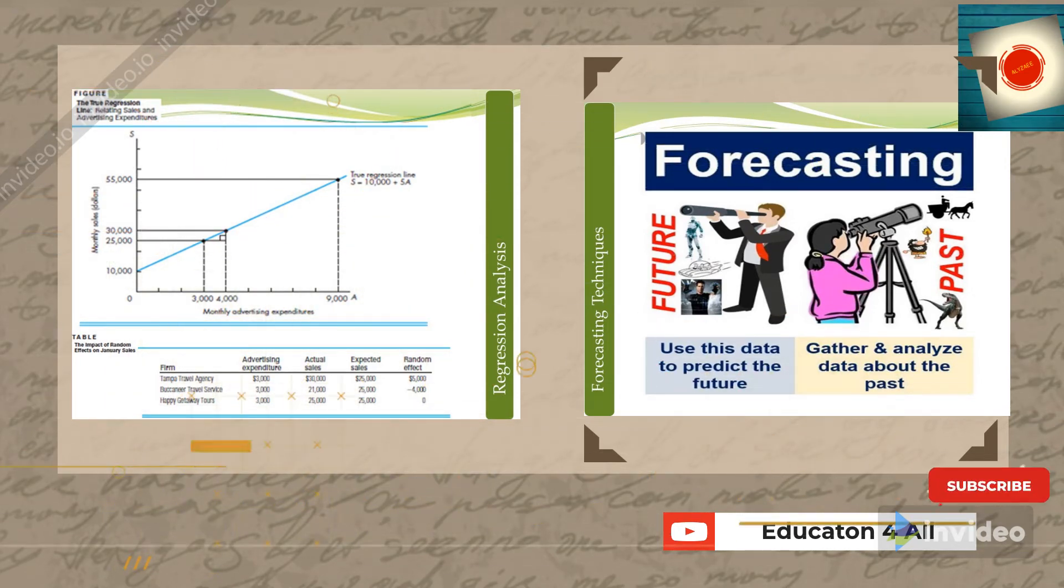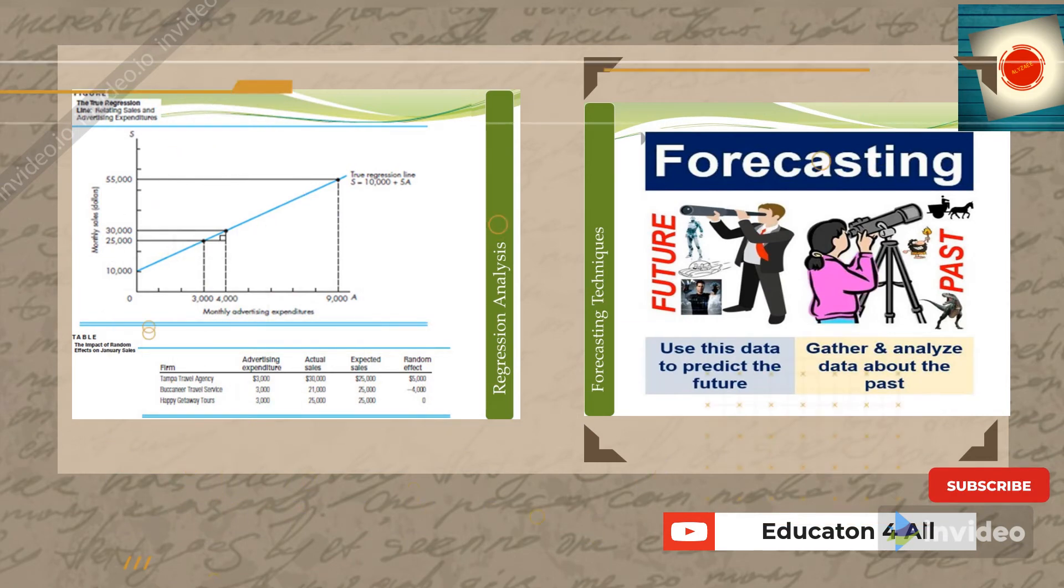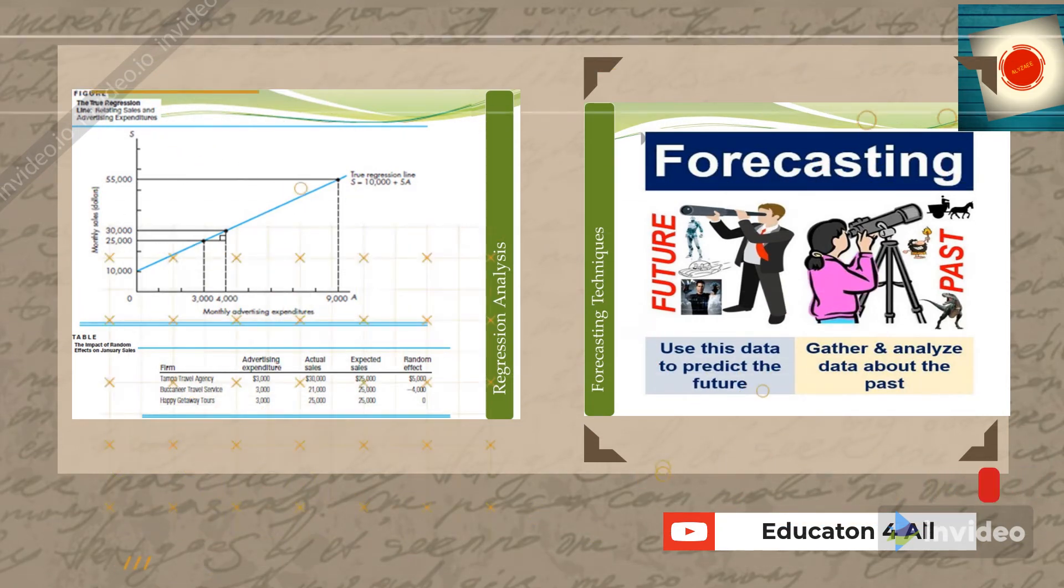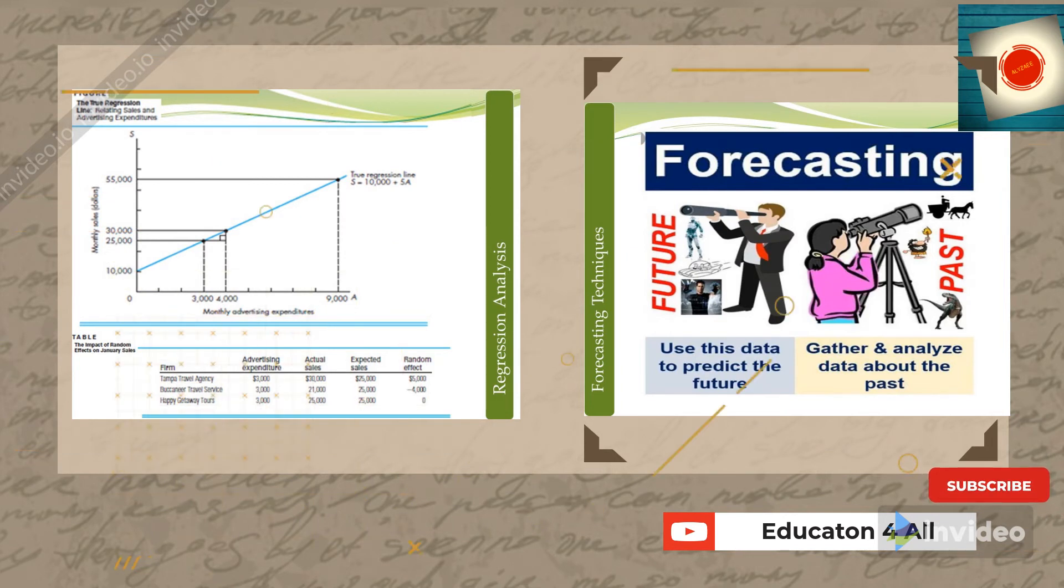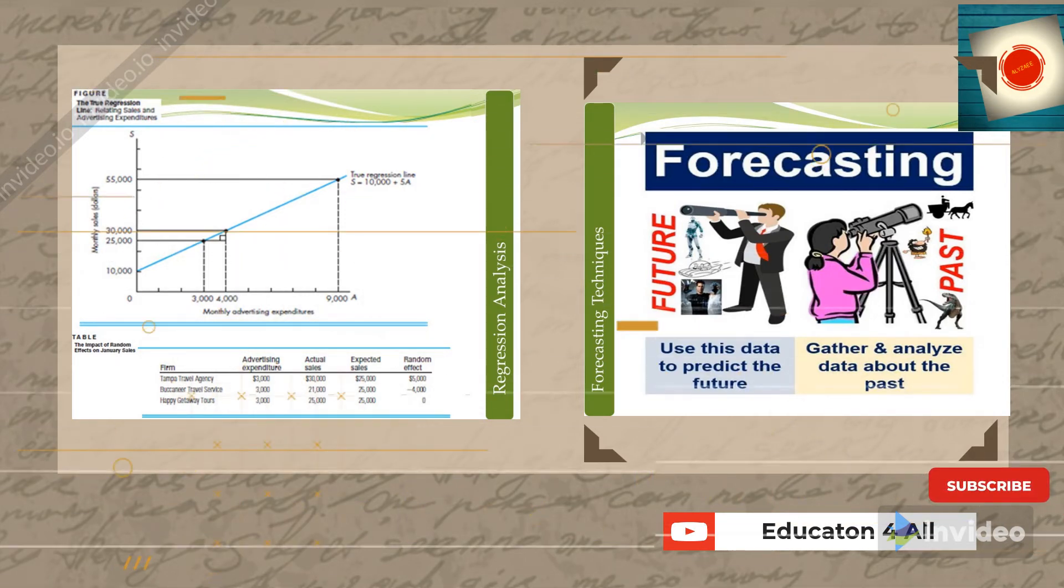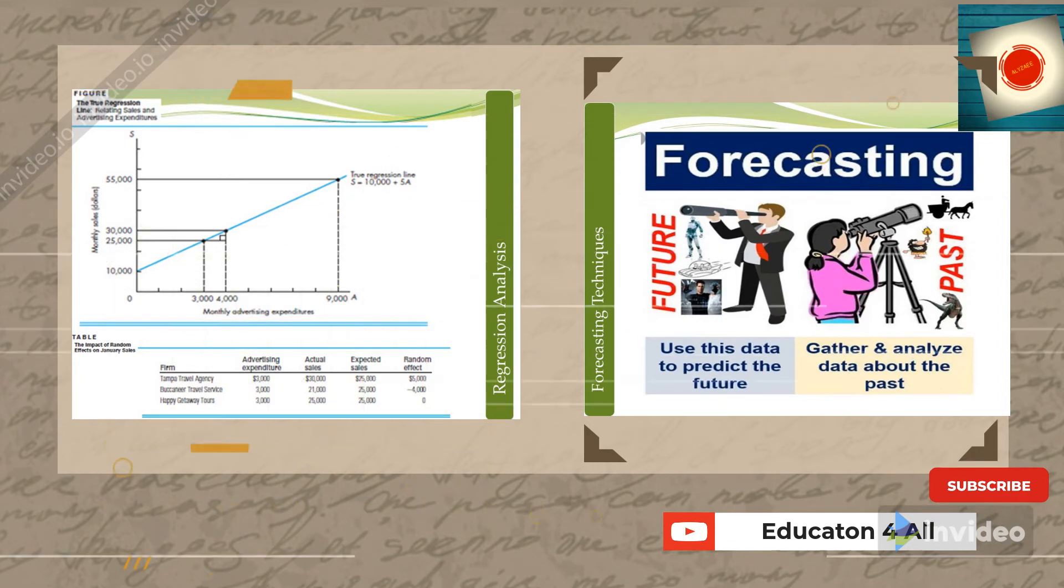Looking at the table: companies X, Y, and Z are travel agencies with expenditures of $3,000 per month on advertisement. Their actual sales are $30,000, $21,000, and $25,000 respectively. Expected sales for all three is $25,000. The random effect for company X is +$5,000 profit, for company Y is -$4,000 loss, and for company Z is zero (break-even).